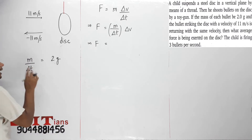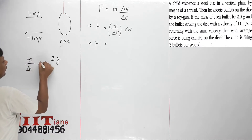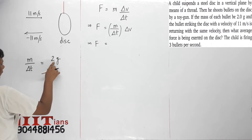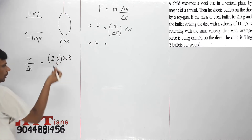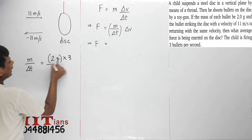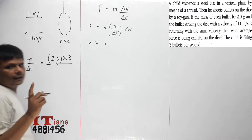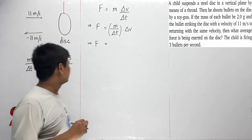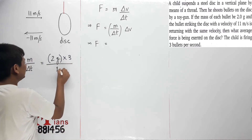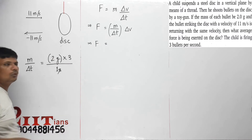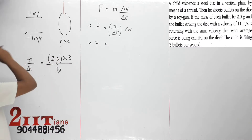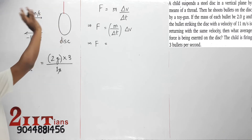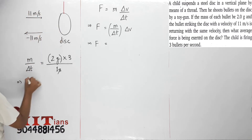m by delta t — kitna mass 1 second mein ja raha? Ek bullet ka mass 2 gram hai, 3 bullets ka mass 2 gram into 3 hoga, yani 6 gram hoga. Time kitna hai? Time hai one second. Ek second mein is pe 6 gram ki takkar ho rahi hai — 6 gram per second mass is being bombarded on this.